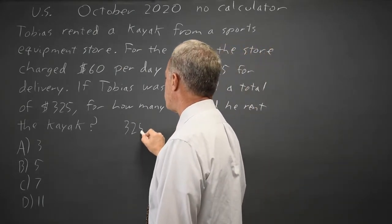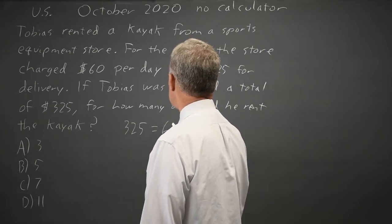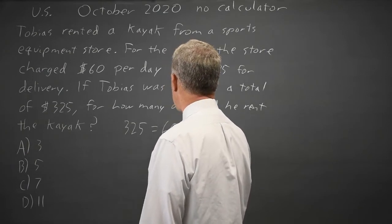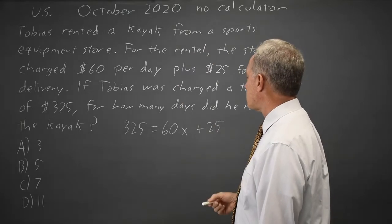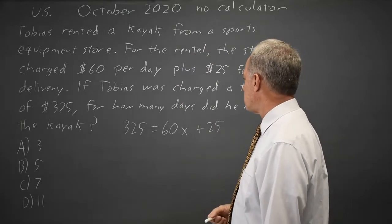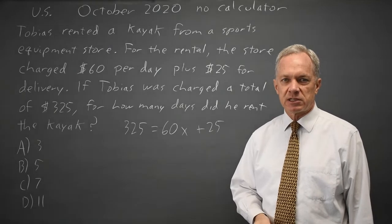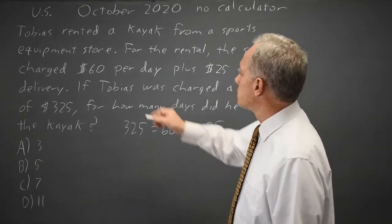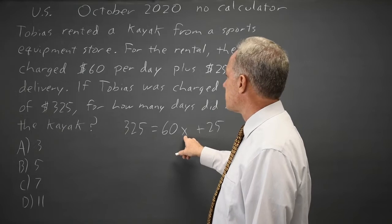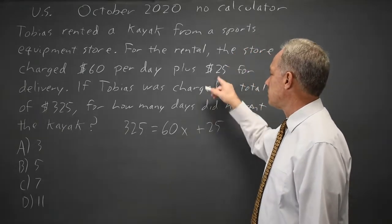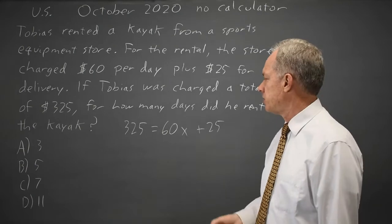So $325 equals 60 times the number of days plus 25, and they're asking for the number of days. We know it's $60 per day times the number of days — that's the total daily price — plus the $25 for delivery. So that gives us the linear equation.